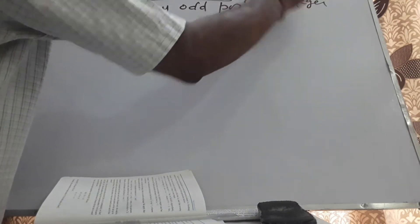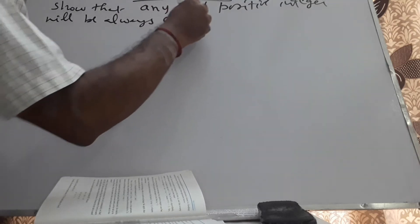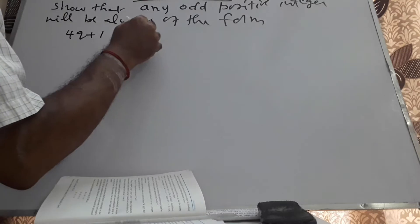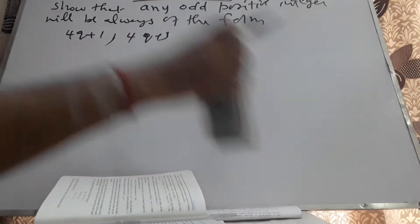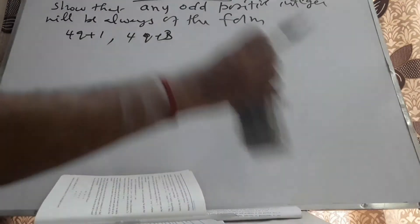Now in this particular video presentation, we will do some more problems which are applications of Euclid's division lemma. One such problem is: show that any odd positive integer will always be of the form 4Q+1 or 4Q+3, where Q is an integer.